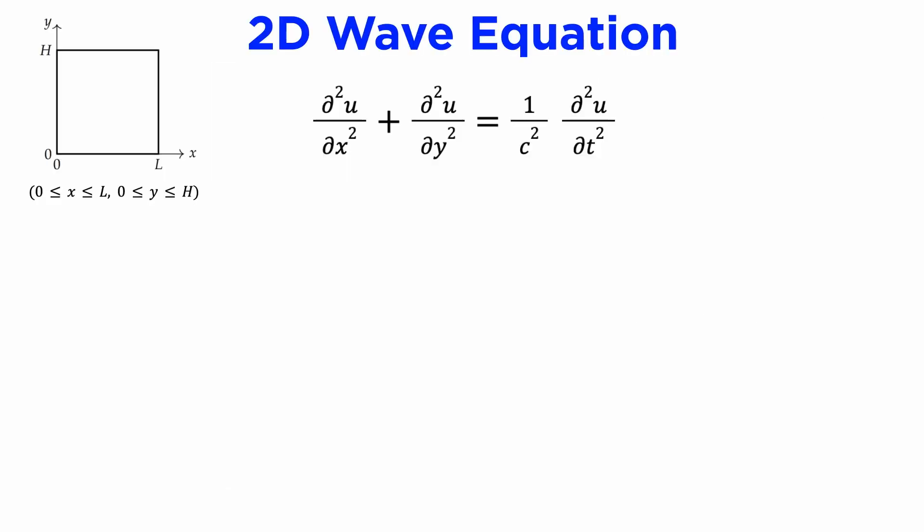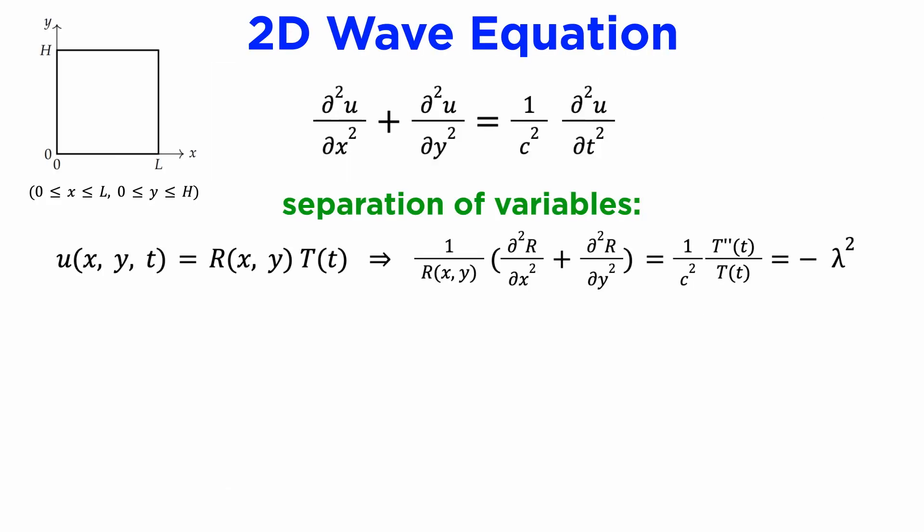If we write down the 2D wave equation, we can use separation of variables, and this time we can separate into a spatial component, which we'll call capital R of xy, and a temporal component, capital T of t.